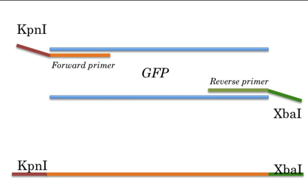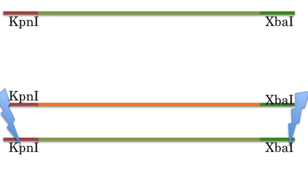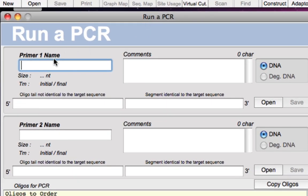As far as our strategy goes, we'll design forward and reverse primers where a portion of the forward primer is identical to the target GFP sequence, with a tail containing the KPN1 restriction enzyme site. Similarly, the reverse primer has a tail containing the XPA1 site. Once we do the PCR it will yield an amplicon with GFP in the middle and KPN1 and XPA1 sites on the flanks, which we can then cleave with restriction enzymes for cloning.